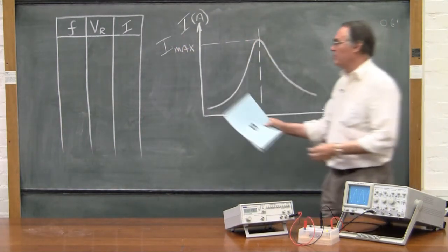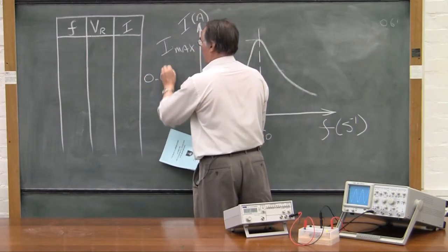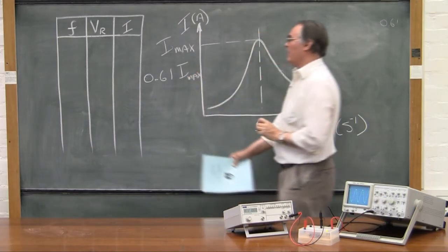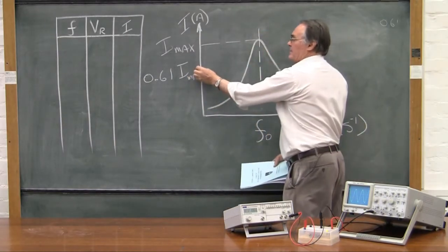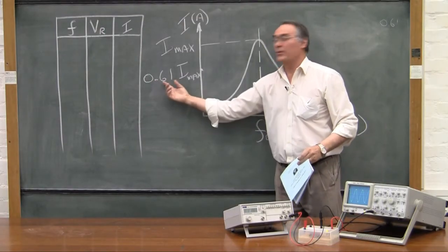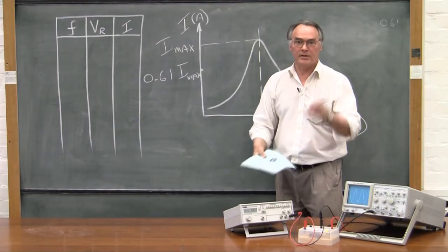Now you find 0.61 of the maximum current and you get a value there somewhere. It turns out that this number 0.61 is actually e to the power of minus a half. You can test it yourself.